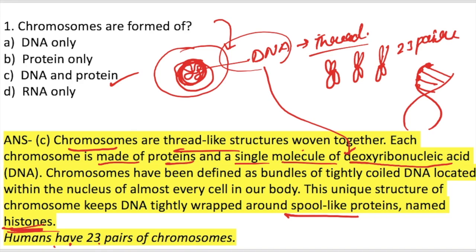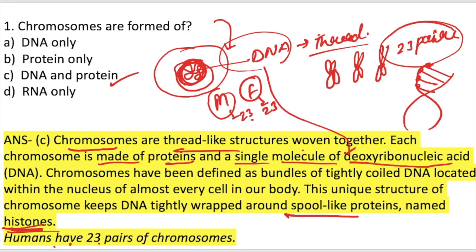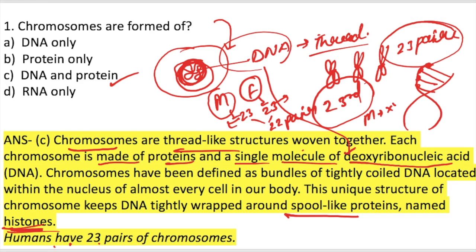Humans have 23 pairs of chromosomes present in both male and female. 22 pairs are the same in male and female; the variation between male and female is only in the 23rd pair of chromosomes, while the other 22 pairs are the same. So there are 23 pairs of chromosomes in total.